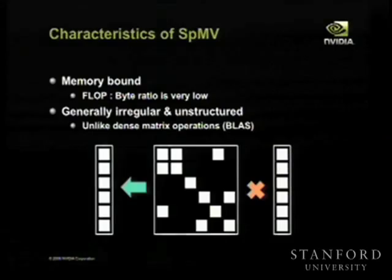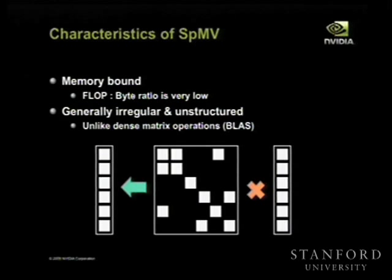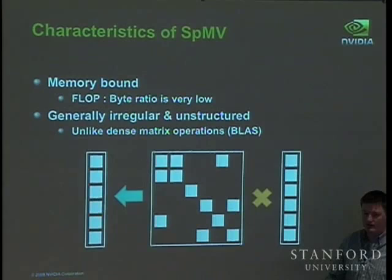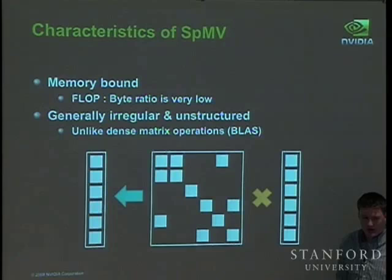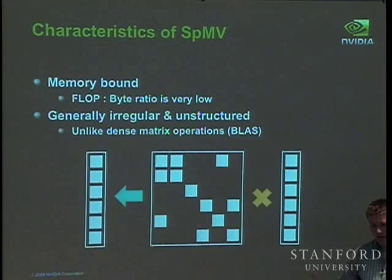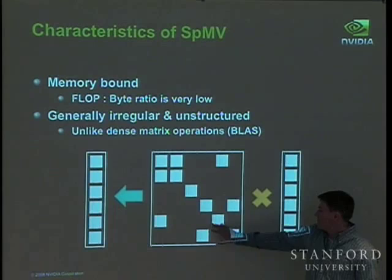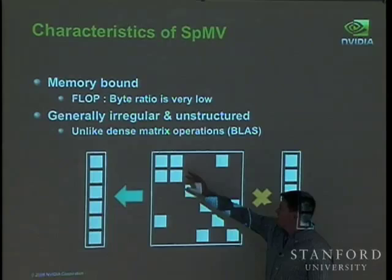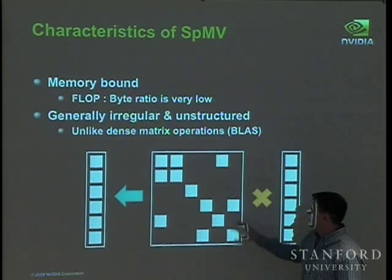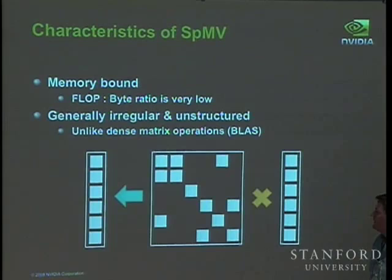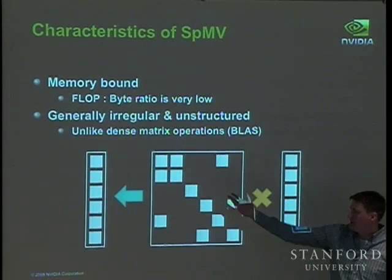A sparse matrix is simply a matrix where most entries are exactly zero. The non-zeros are the meaningful entries. In practice, 'sparse' can mean a matrix of a million by a million where each row has perhaps ten or a hundred entries. In SpMV, we take each row, do an irregular gather from the source vector, multiply by the matrix entries, sum them, and write to the destination vector — a sparse gather, then reduction, then write.